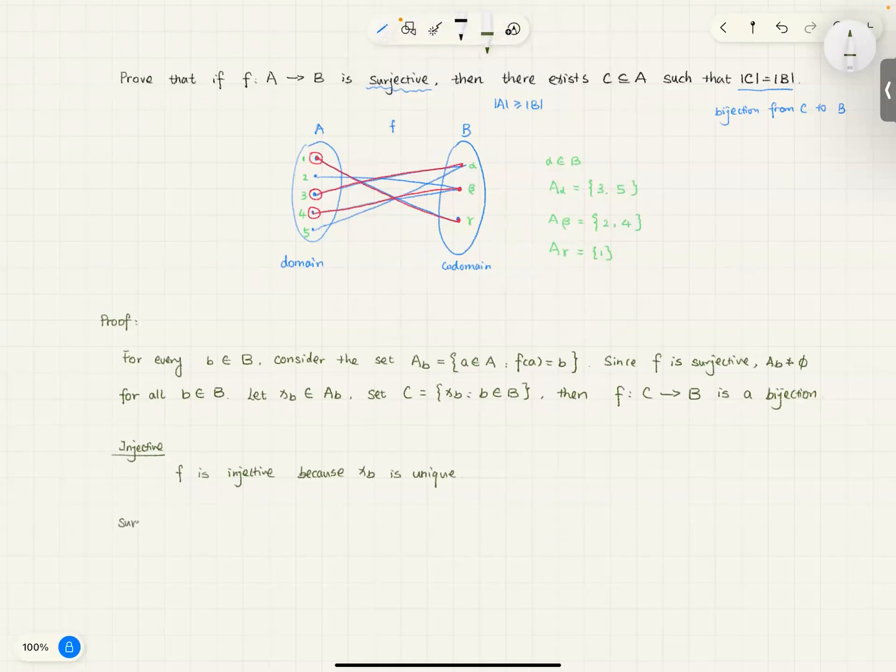And surjectivity. Because the original function is surjective. f(x_b) equals to b for every b in B. This is not really a formal proof here. I don't want to give you a formal proof because this question is quite similar to your formal question. So, this is not formal. You should try to make it formal.